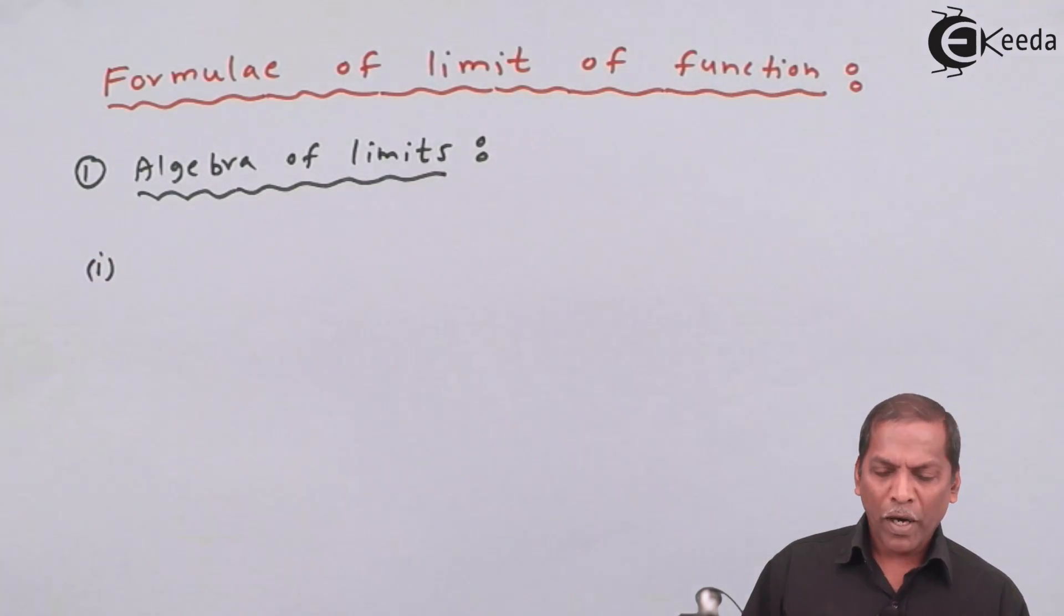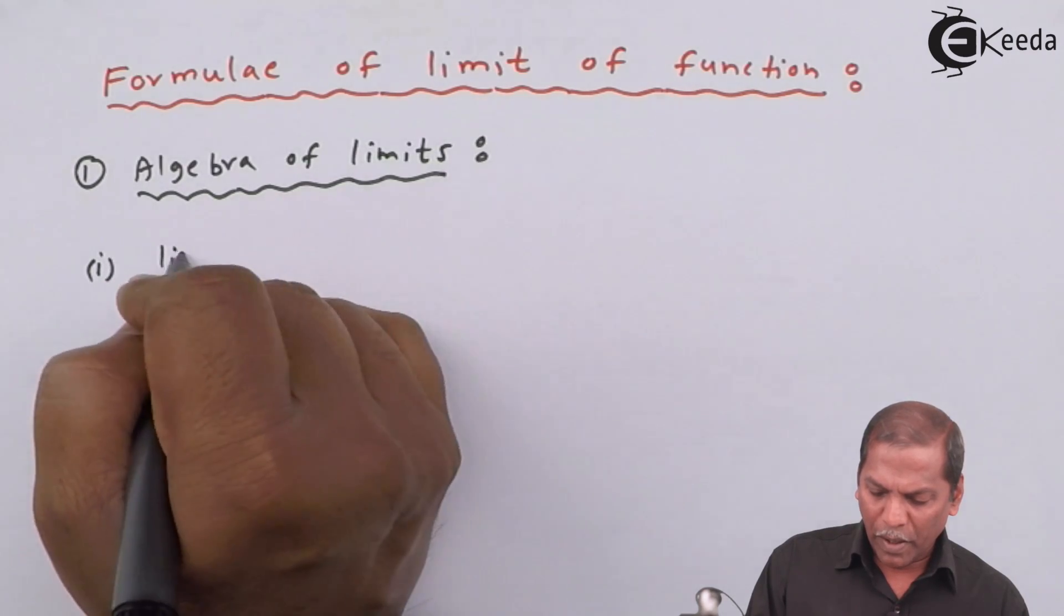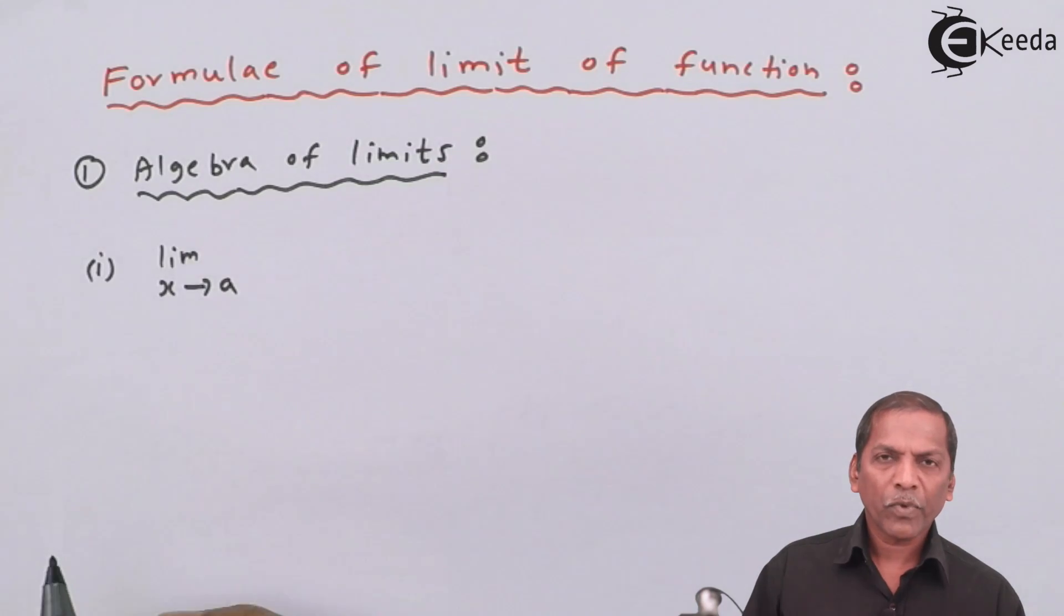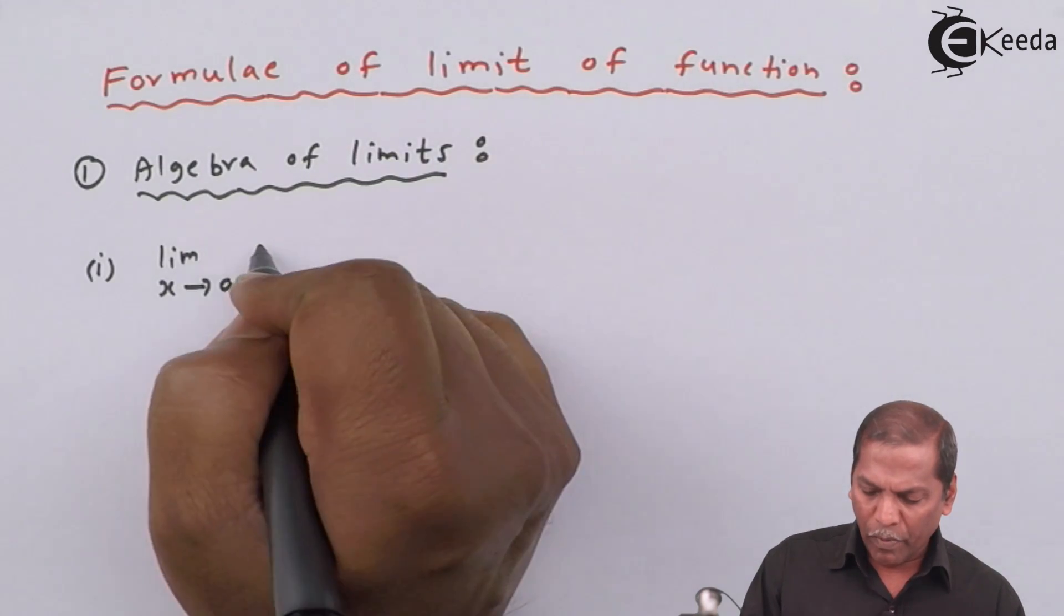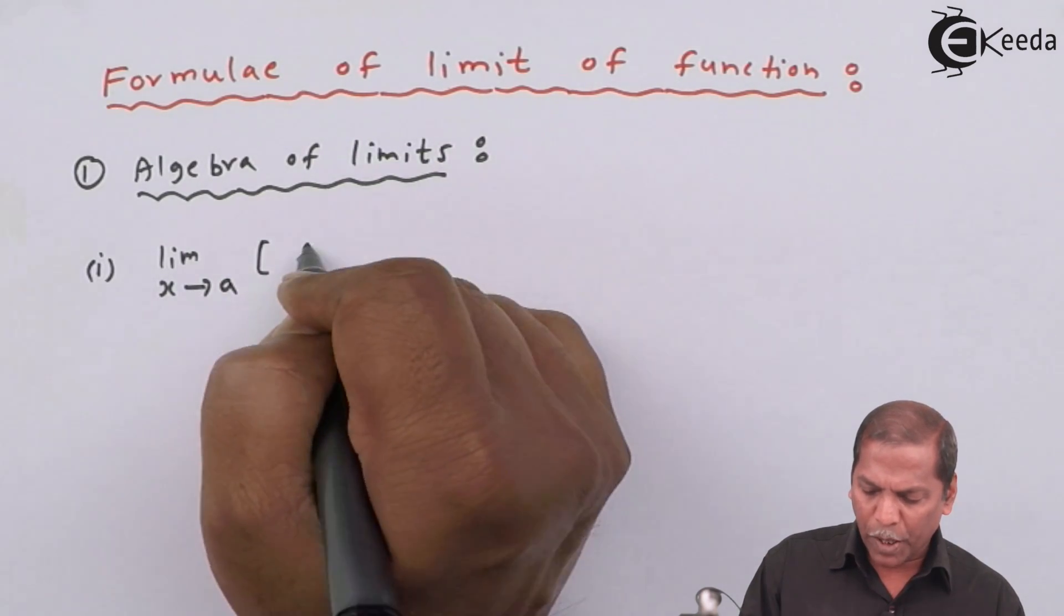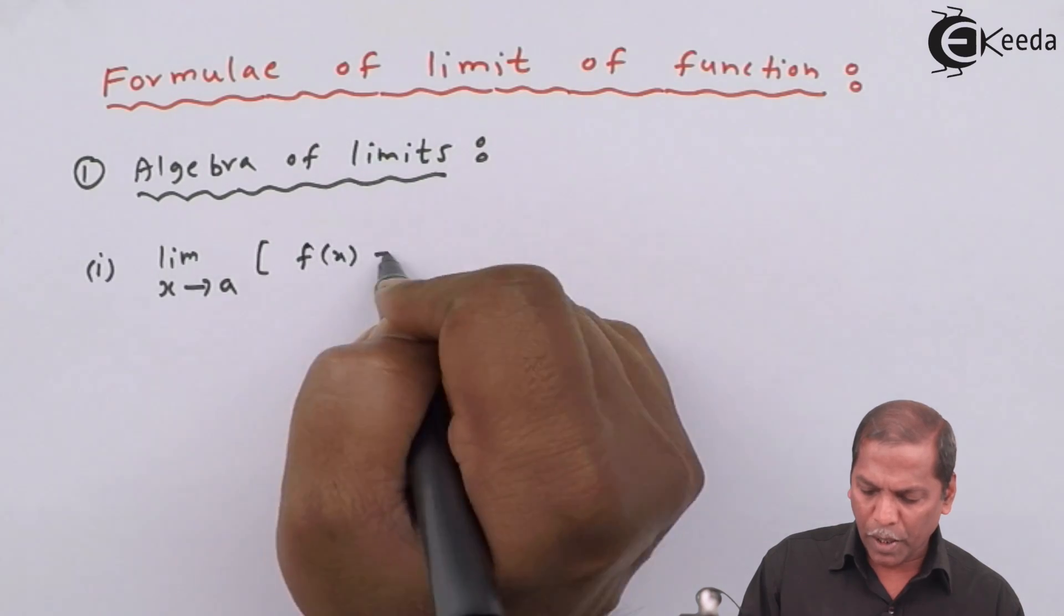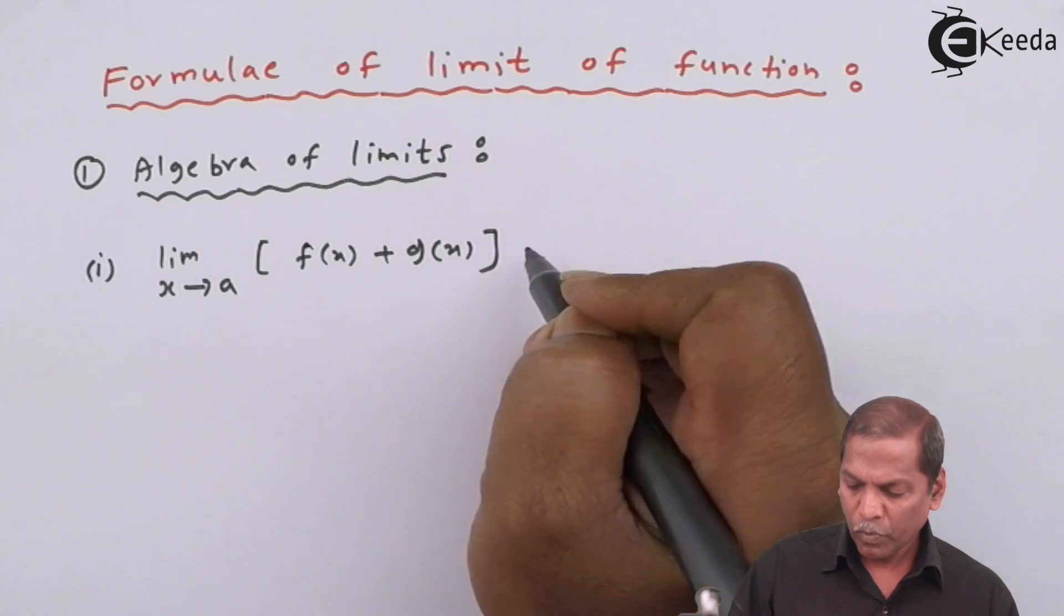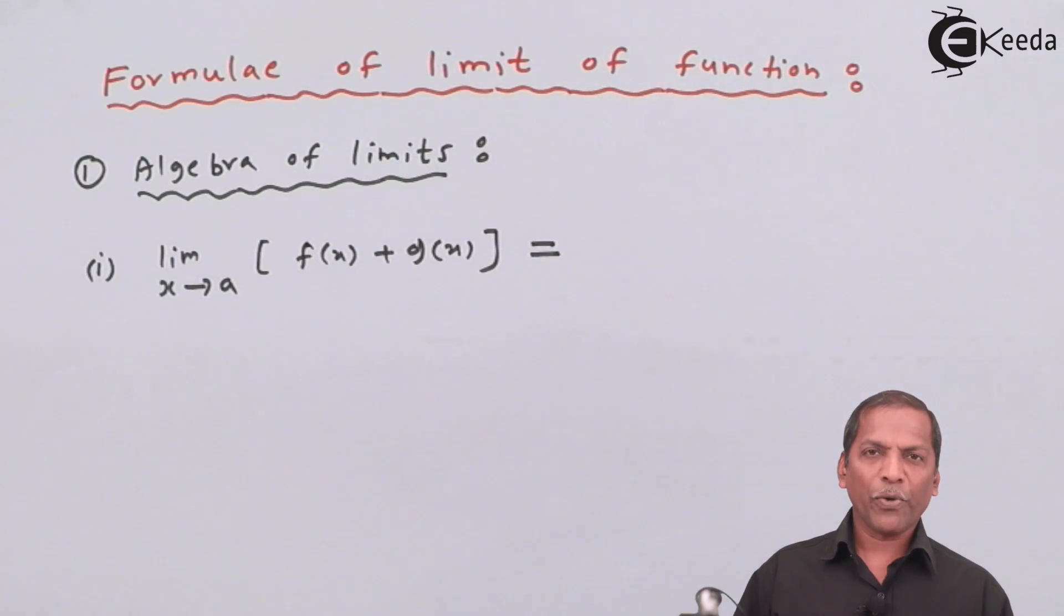Number 1: limit x tends to a in bracket f of x plus g of x bracket complete, that equal to limit x tends to a f of x plus limit x tends to a g of x.